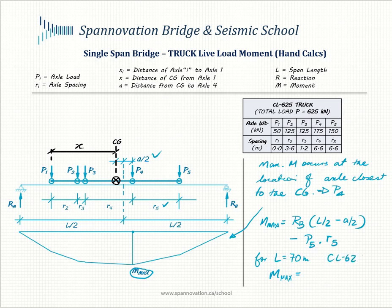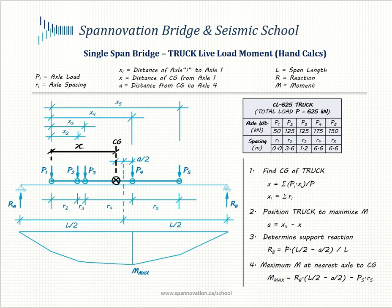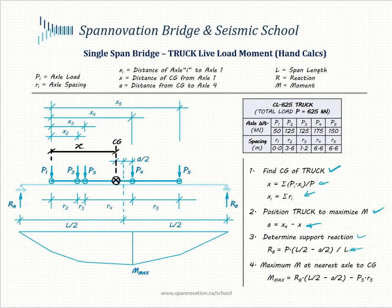For a span of L equal to 70 meters, the unfactored maximum moment due to a single CL625 truck is 9268 kN·m. To summarize: first find the CG of the truck; then position it so the CG and nearest axle P4 are equidistant from mid span using parameter A; then determine RB; and finally calculate the maximum moment at P4 using the formula provided. This procedure works for any truck and any single span length.